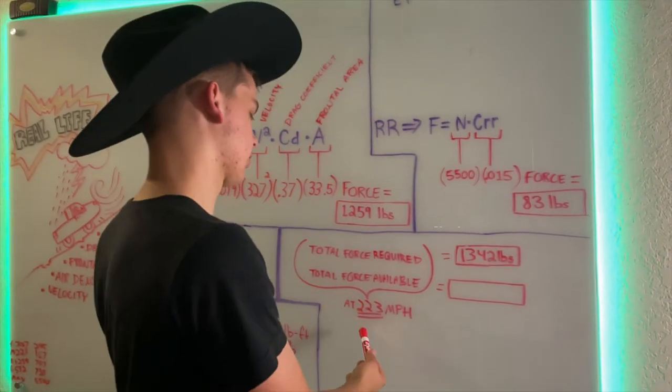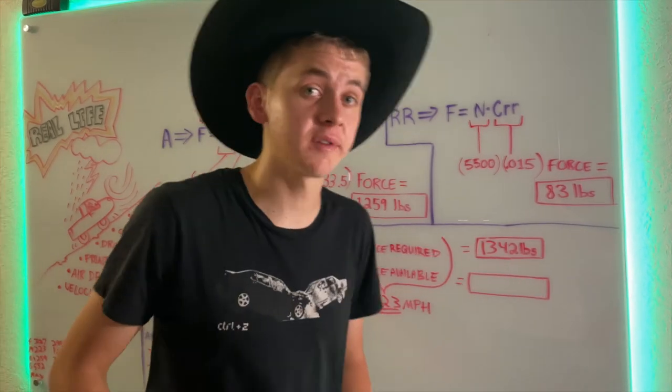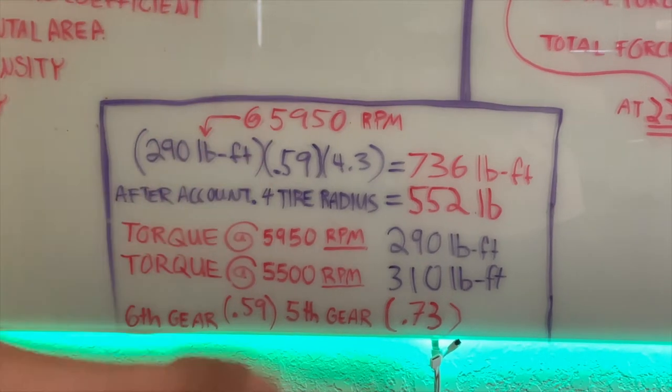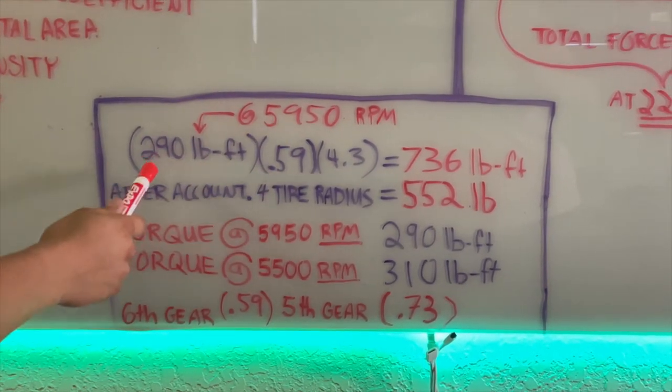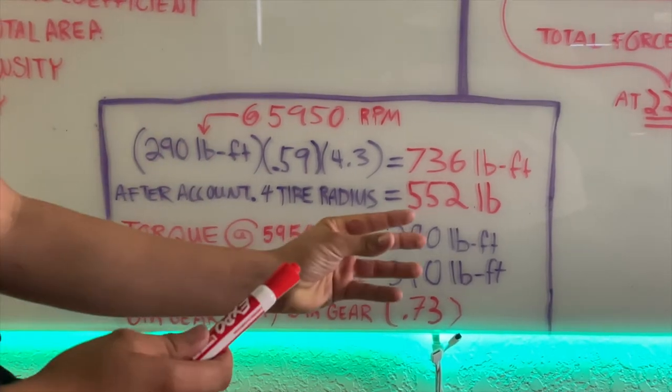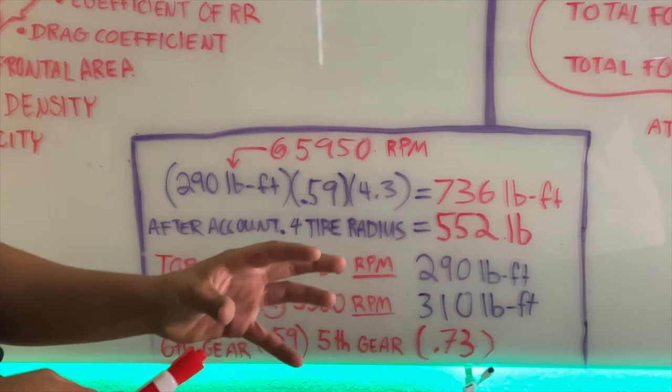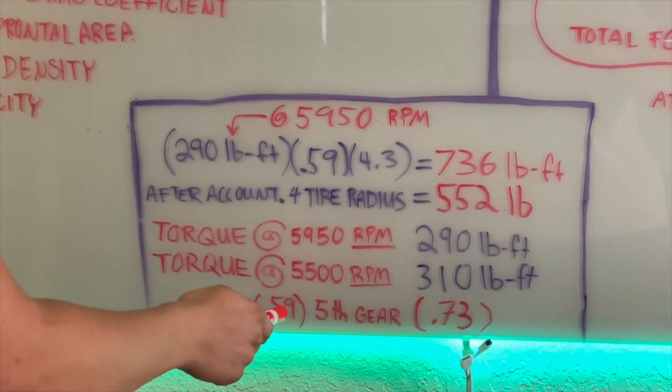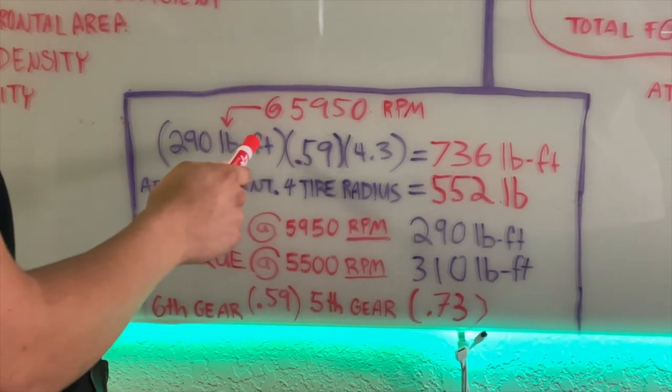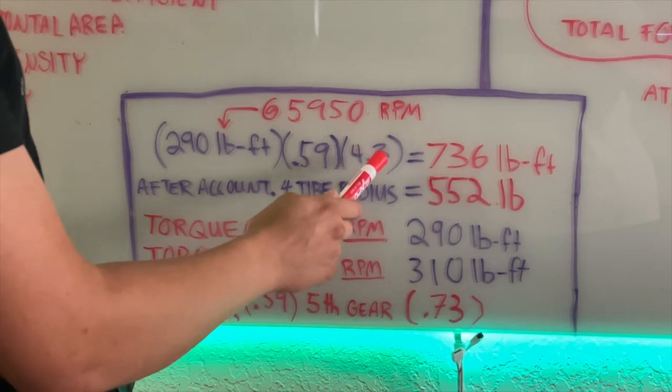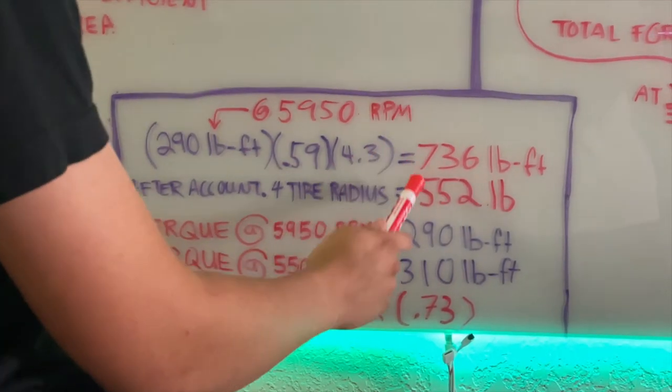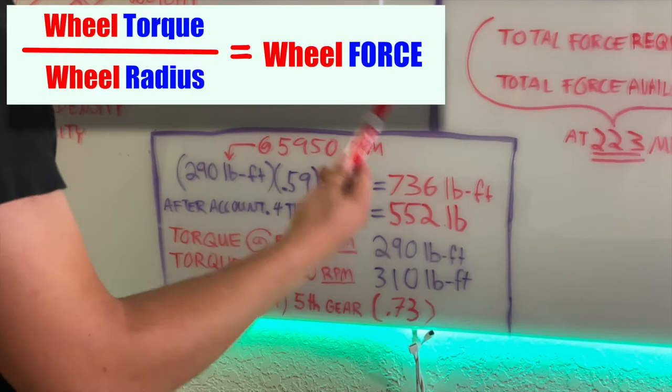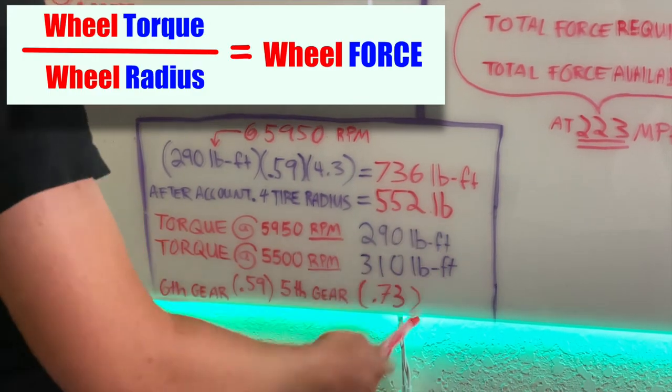According to a dyno chart, at 5950 RPM (max RPM) my engine should be producing 290 pound-feet of torque coming out of the crankshaft. Assuming the torque converter is locked in a one-to-one ratio, we go right into the top overdrive ratio, sixth gear 0.59. Multiply 290 pound-feet of torque by 0.59, then multiply by 4.3 (the differential ratio), and we get 736 pound-feet of torque coming into the wheel.